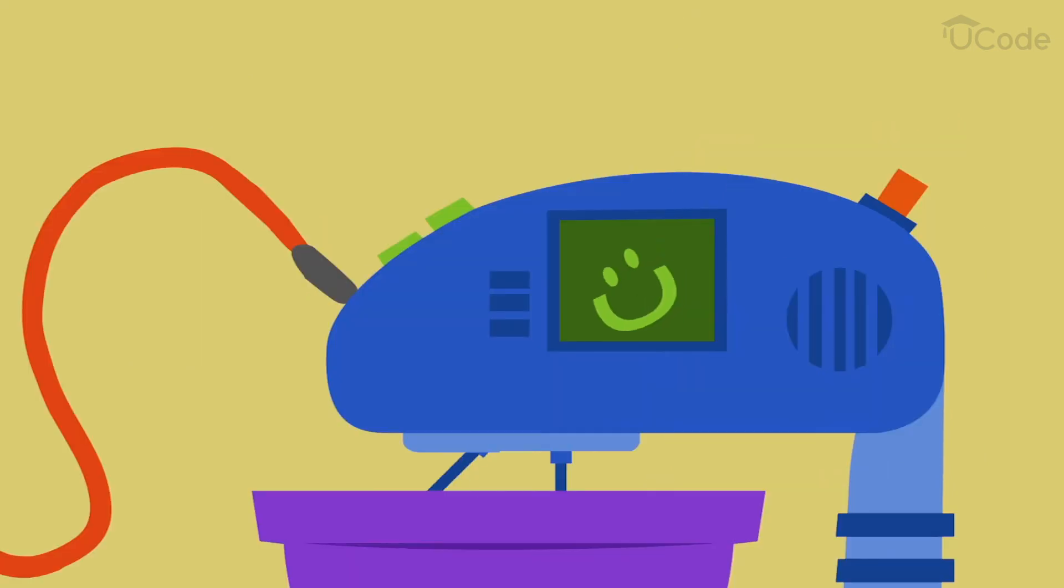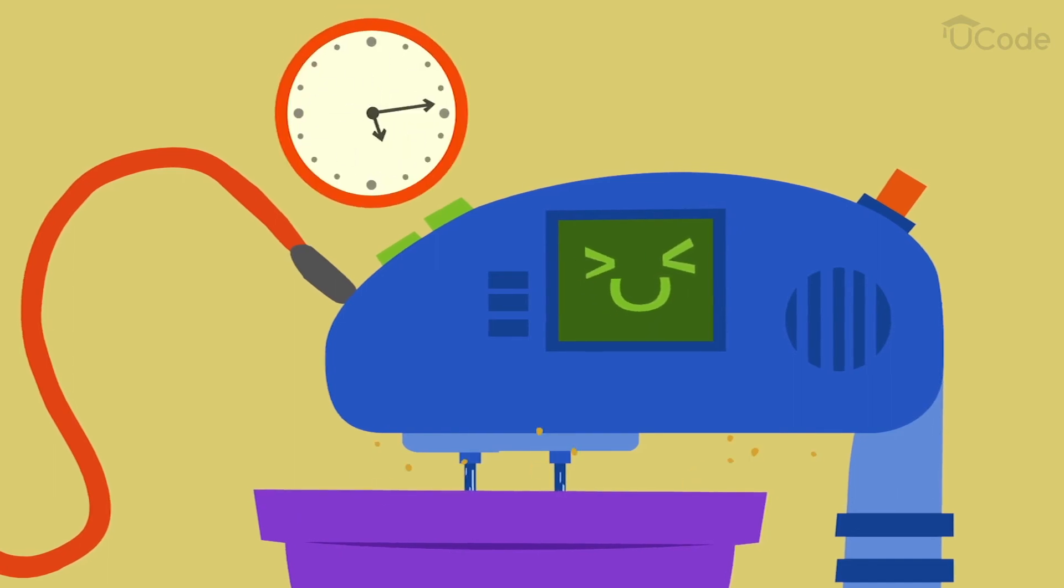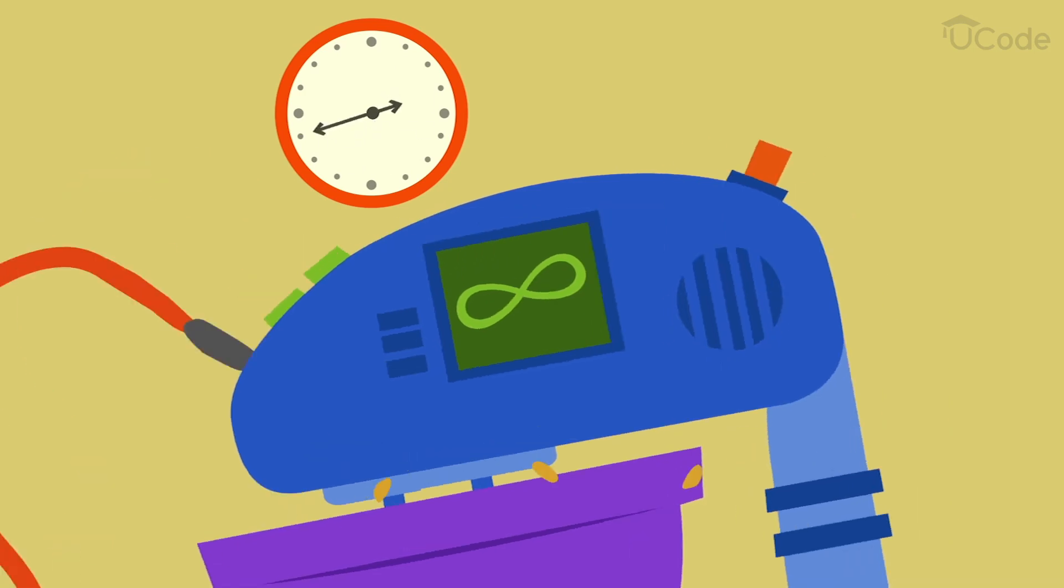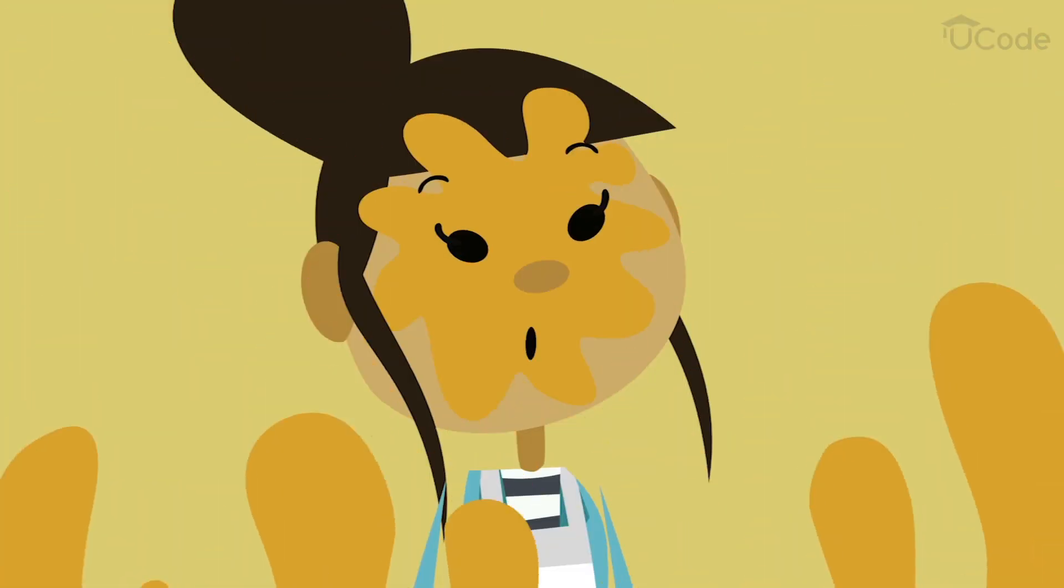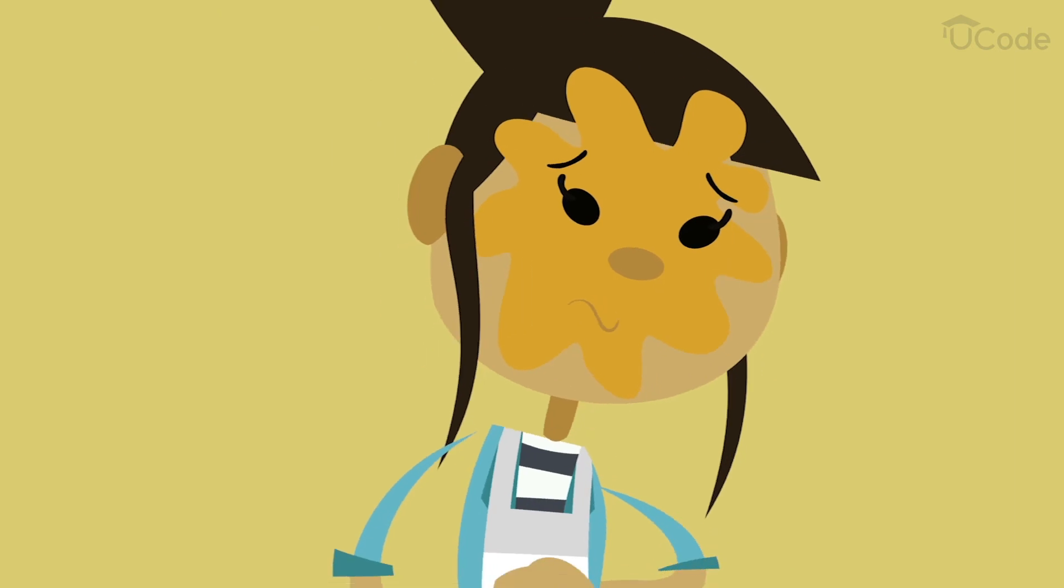As much as we enjoy learning about programming loops, we should watch out for infinite loops. These loops run for an infinite number of times, mostly due to a programming error. In this case, the mixer would just keep stirring and stirring and never stop. So, no delicious muffins.